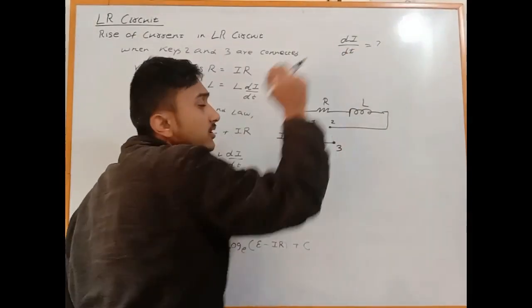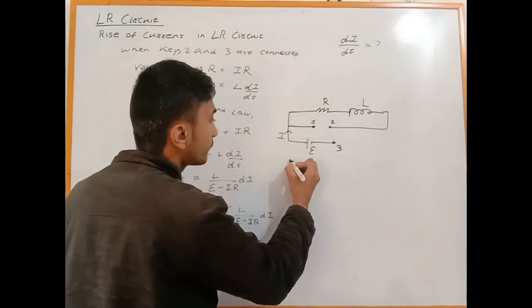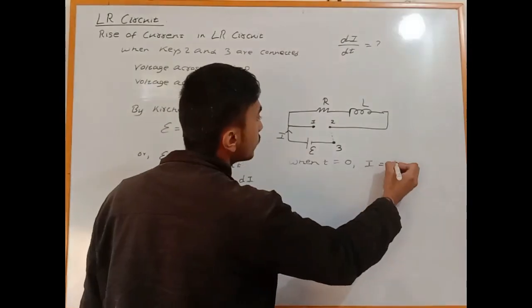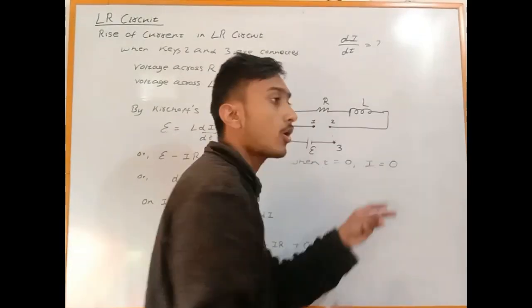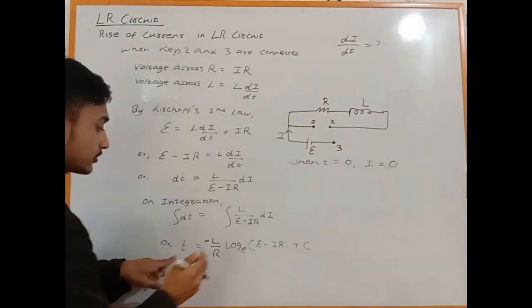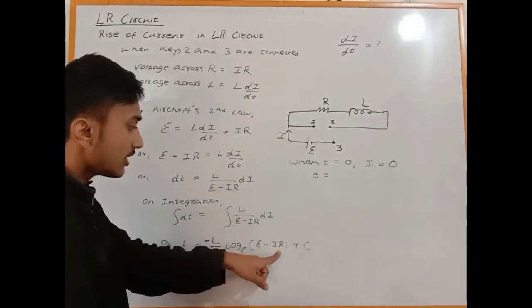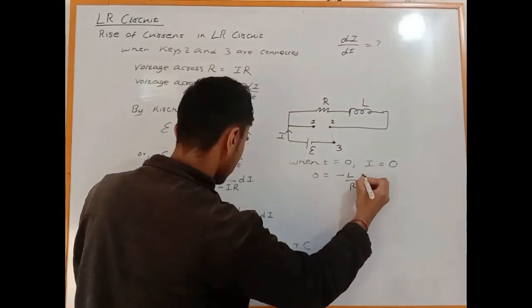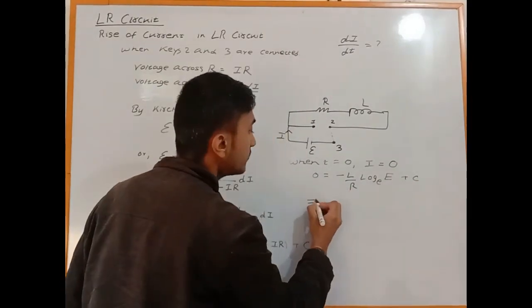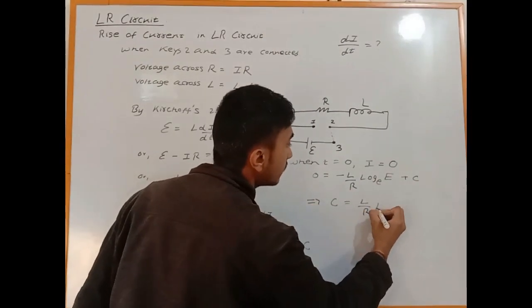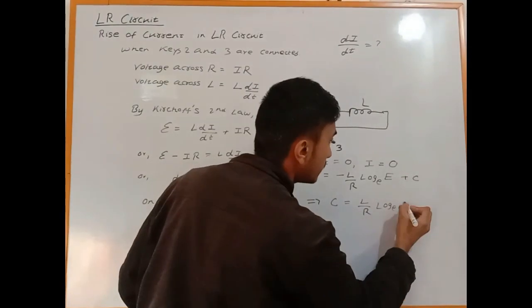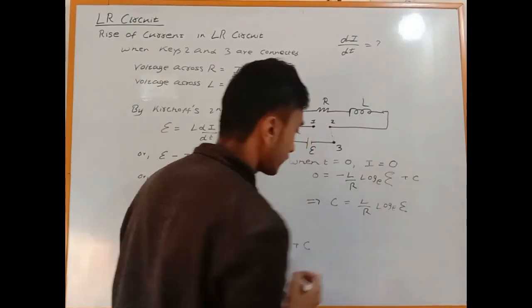For the left side, the integration of dI over (E minus IR) gives us minus (L/R) times log(E minus IR) plus C, where C is the integration constant. At the beginning, at time zero, the current in the circuit is zero.